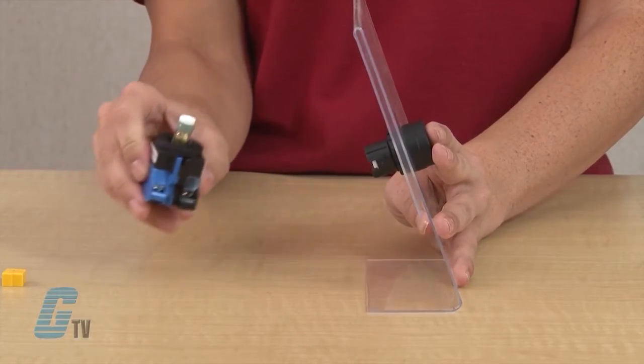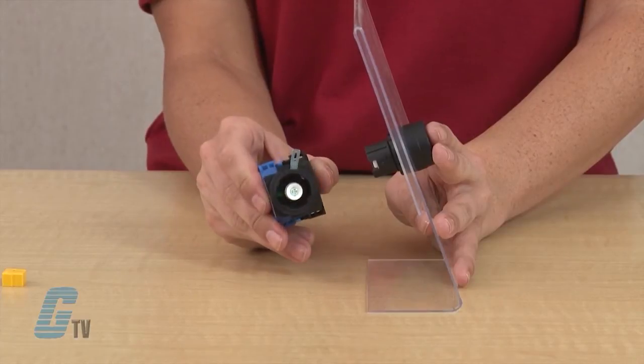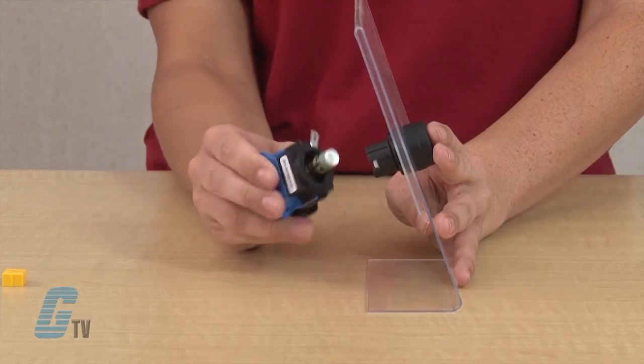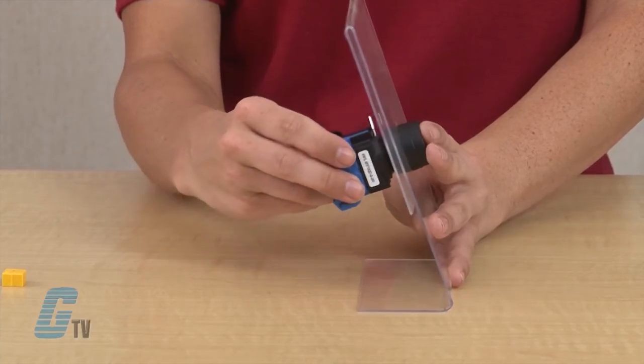Next, line the operator up with the contact assembly. You can do this by locating the word 'top' on the operator and assembly and lining them up accordingly.